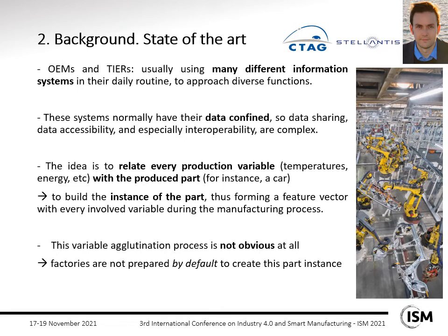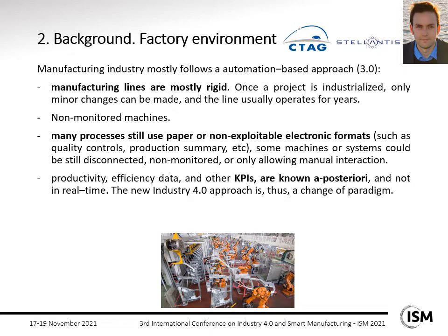Factories, by default, we believe are not prepared to create this part instance. One of the causes is that manufacturing industry right now mostly follows an automation-based approach — an Industry 3.0 approach — where manufacturing lines are mostly rigid. Once a project is industrialized, only minor changes can be made. Machines are not globally monitored. Still today, some processes are recorded on paper or in non-exploitable electronic formats. And sometimes productivity and KPI data are known only a posteriori, not in real time.